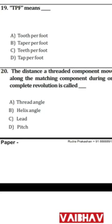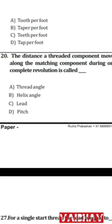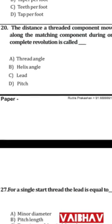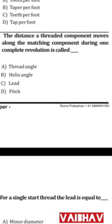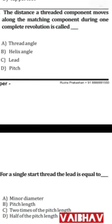Question 30: The distance a thread component moves along the matching component during one complete rotation is called its lead. The answer is C — lead.